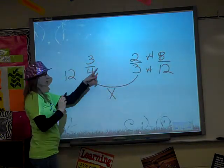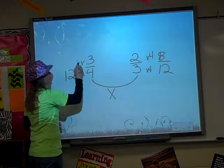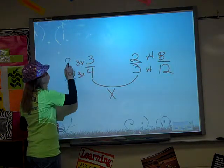And then on this side I multiplied the 4 times the 3 and whatever happens to the bottom should also happen to the top, so 3 times 3 is 9.